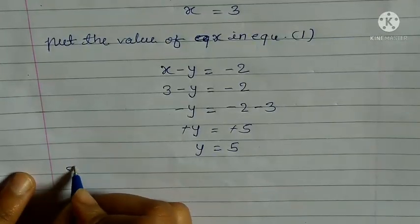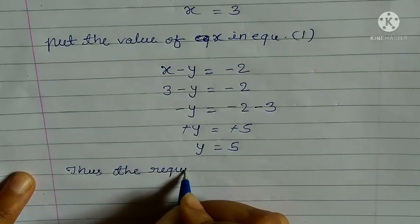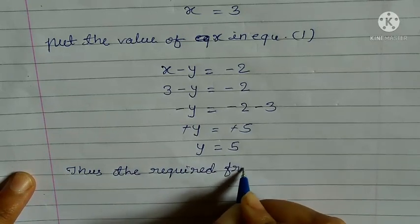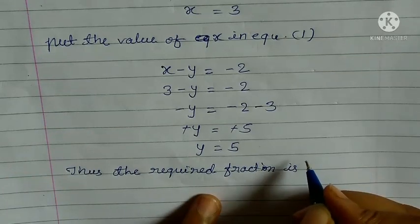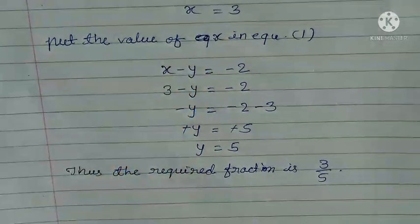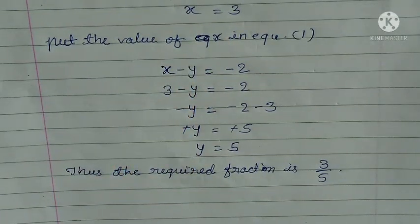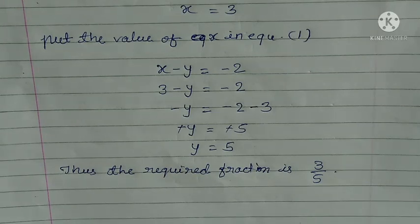Thus, the required fraction is x upon y, which is 3 upon 5. This is your answer. Similarly, try the remaining parts of question number 2 on your own. If you can't solve them, a doubt class is being held at your school — you can come and ask there.